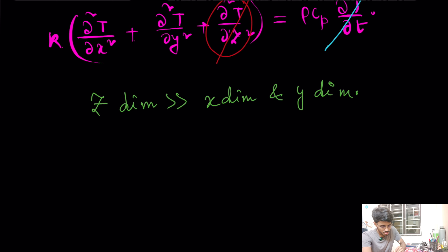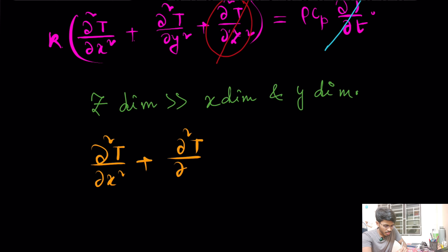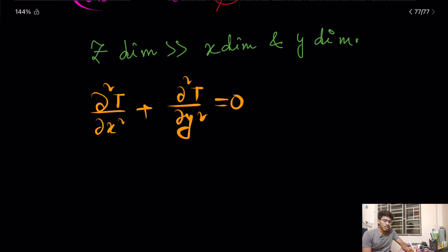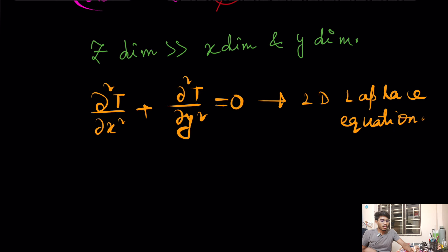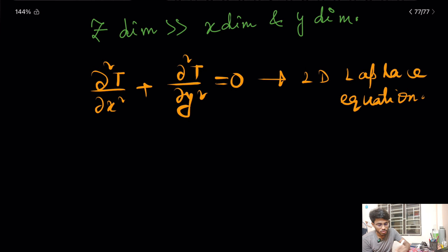As an engineer, your job is to write and simplify the governing equation — any software can solve it. The governing equation now reduces to: ∂²T/∂x² + ∂²T/∂y² = 0. In two-dimensional coordinates, this is the 2D Laplace equation.